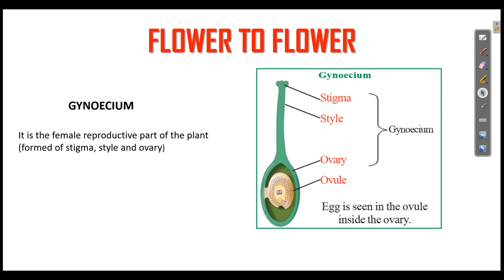The Gynosium is the female reproductive part. The Gynosium is formed of stigma, style, and ovary. The ovary contains ovules.